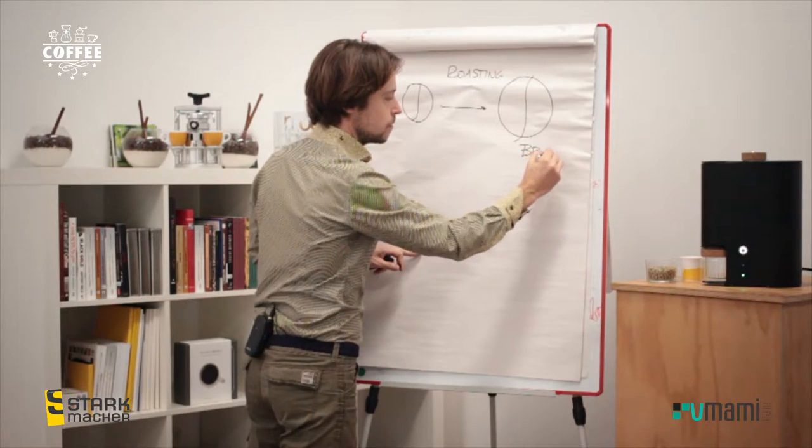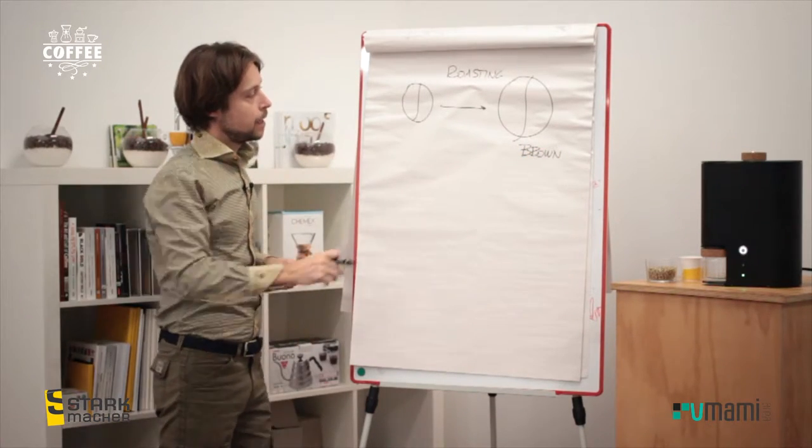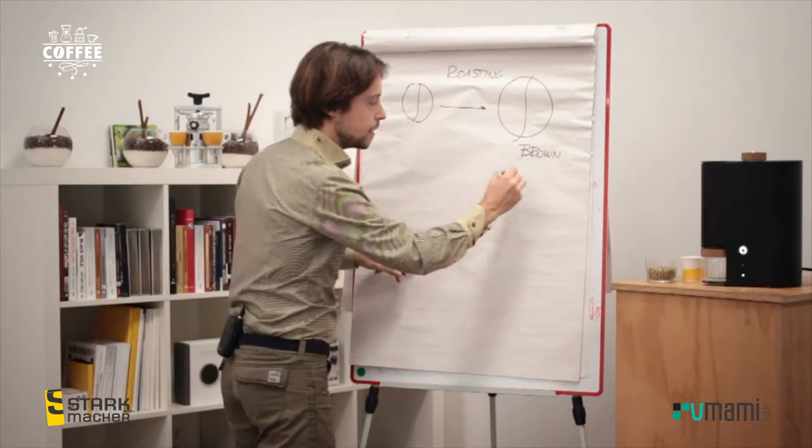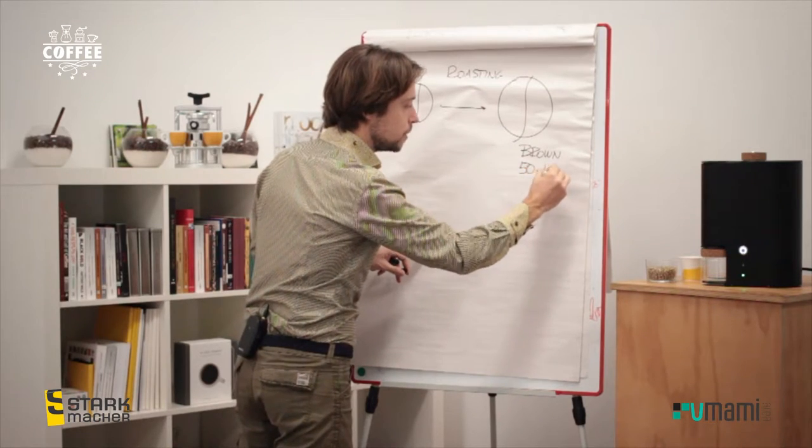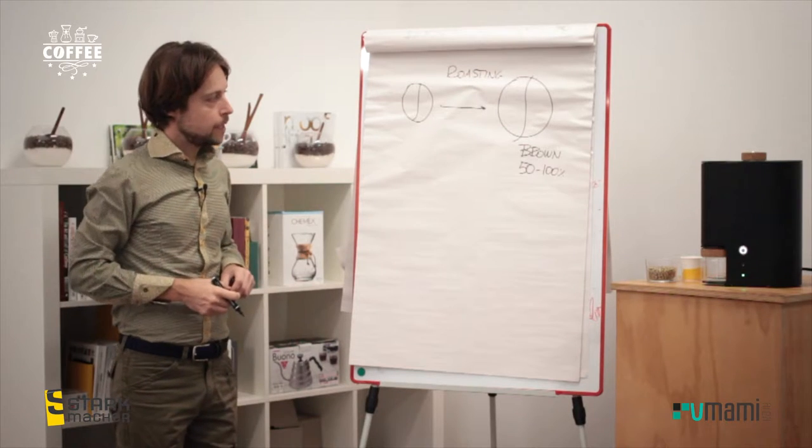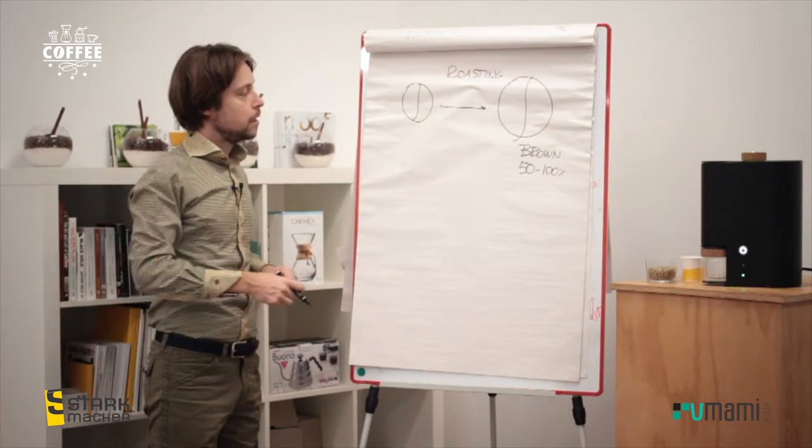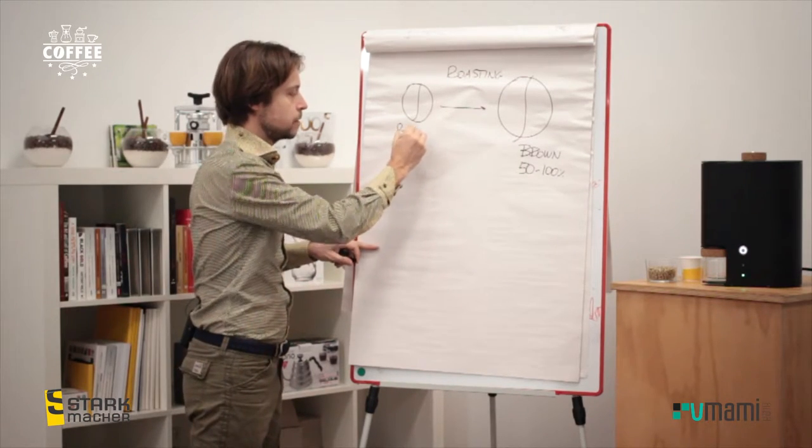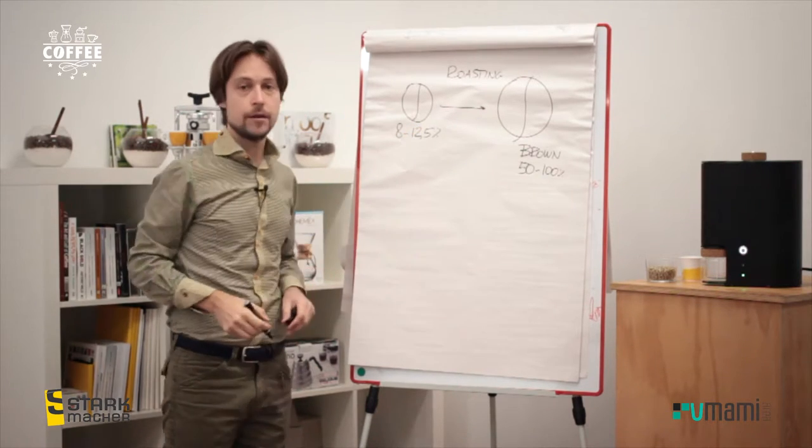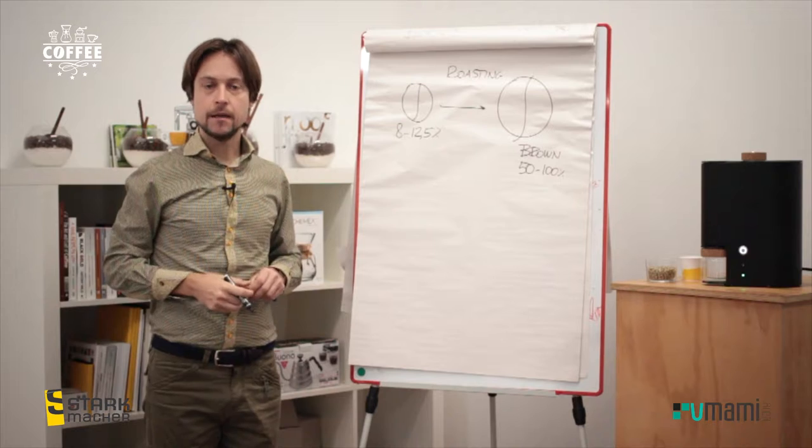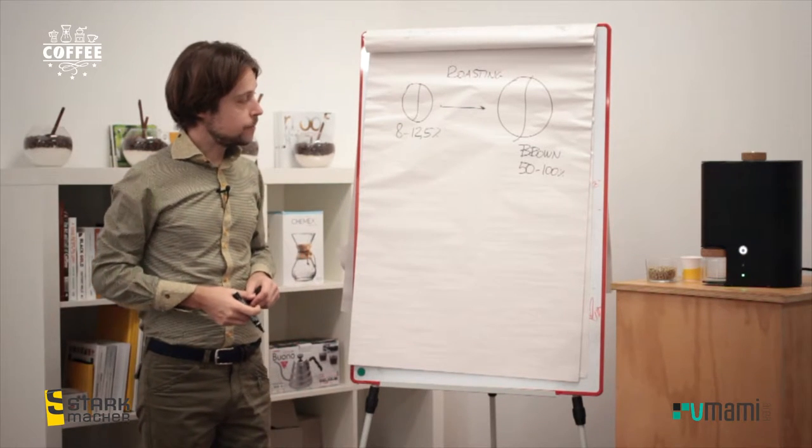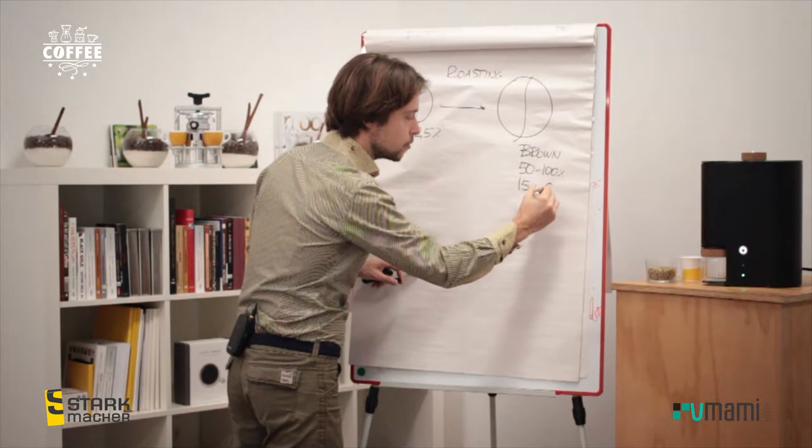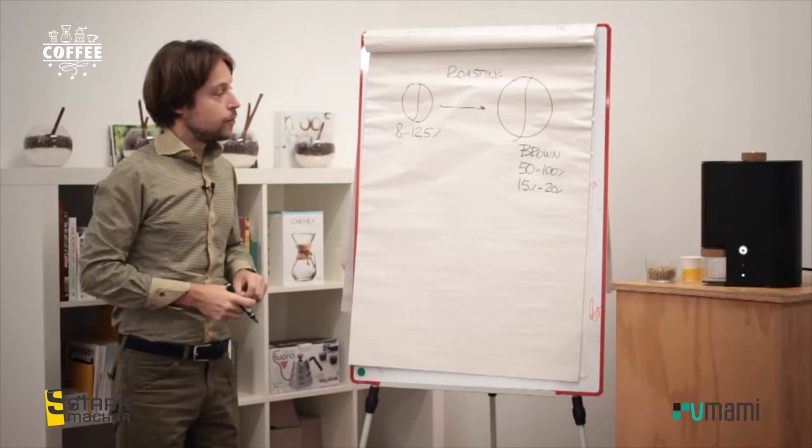So this is one of the most important ones. As you can see also from my drawing, the volume of the bean expands. So at the end I have an increasing volume that could be between 50 and 100 percent. Then I have a loss in weight. For sure I lose the moisture of the bean, that usually is around 8 to 12.5 percent. So I lose water, but I lose also organic material, aroma, volatile aromas, and also CO2. So the weight loss could be between 15 and 20 percent.